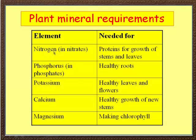So what does a plant need? A plant will need nitrogen, which is taken in in the form of nitrates. Nitrates are needed for proteins, and proteins are needed for the growth of stems and leaves. Phosphorus is taken in as phosphates, and is needed for healthy root growth.